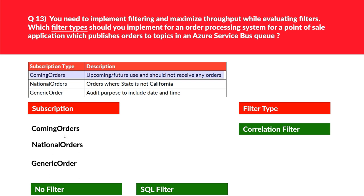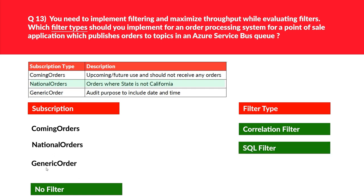Let's look at the second statement: national orders. Looking at the national orders table, it depends on at least one property or WHERE condition — for example, state should not be California — so 'SQL filter' looks good. For the third statement, generic orders, it's meant just for audit purposes, so we don't require any filter. 'No filter' looks good.